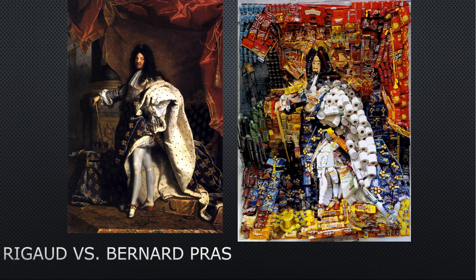This one I really like: Rigaud versus Bernard Prost. We saw the Hyacinthe Rigaud portrait of Louis XIV on the left, and this artist Bernard Prost duplicated it out of objects bought at a dollar store. I love how the ermine cape has become a bunch of toilet paper, with lots of candy and snacks in there too. It's an assemblage — the actual artwork, I believe, is the photograph and not the physical objects.